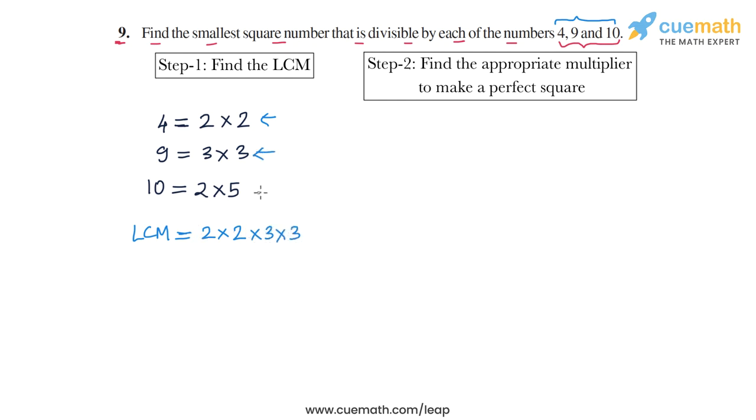And then the maximum number of 5s is 1 in the number 10, so the LCM should have 1 repetition of 5. So the LCM of these numbers is 2 into 2 into 3 into 3 into 5. If you want, you can write this as a number also - this is 4 into 9, 36 into 5, 180. But we will be basically using the prime factorized form of the LCM for the next step.